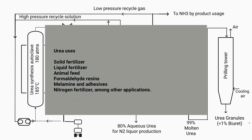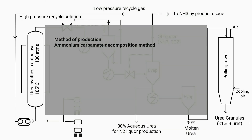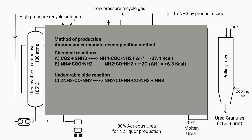It is used in solid fertilizer, liquid fertilizer, animal feed, formaldehyde resins, melamine and adhesives, and nitrogen fertilizer, among other applications. If we talk about the methods of production, urea is made in the industry by the ammonium carbamate decomposition method. In this method, the following reactions take place, and the overall reaction is exothermic.